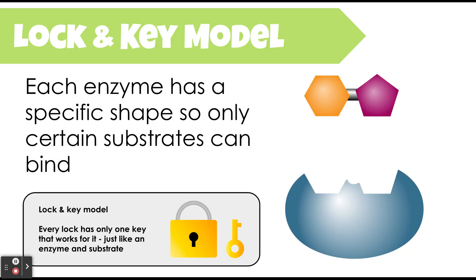We call this the lock and key model, because every enzyme has a very specific shape to it. That means only certain substrates with the correct shape can bind to the enzyme — just like a lock and a key. Every lock only has one key that will work based on shape. If you try to put in a key that doesn't have the right shape, it won't unlock the lock. Similarly, enzymes have a specific shape that matches the specific shape of the substrate. When the shapes match, they bond together, allowing the enzyme to do its thing.